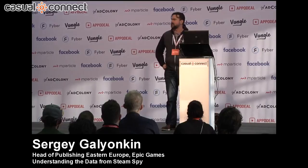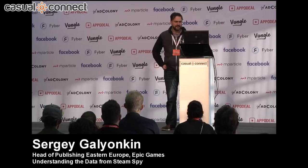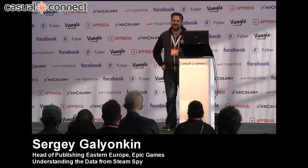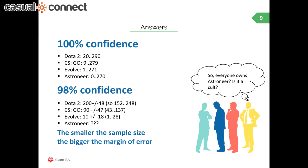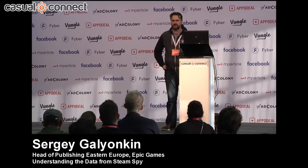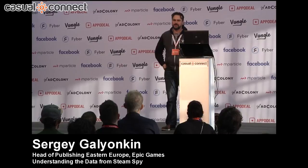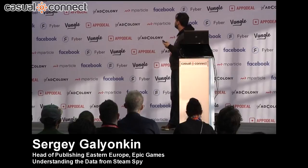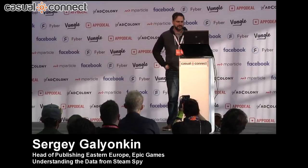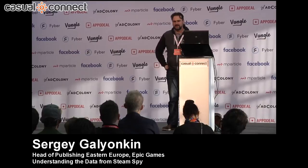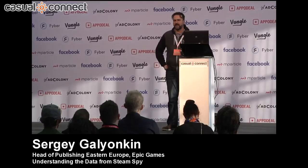When your margin of error is so big it just doesn't make sense as a good estimate, so we have to go with 98% confidence. In most political or social surveys people actually use 90 to 96% confidence, because they ask fewer questions. I have to ask users about over 15,000 games they own, so it's harder than asking about three politicians or five political parties. And as you can see on this example, the smaller the sample size the bigger the margin of error relative to the sample — so for Evolve, numbers could be 10 plus or minus 18, where the margin of error is actually bigger than the actual estimate.